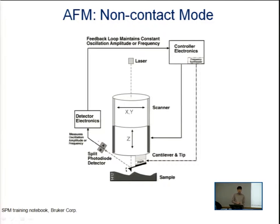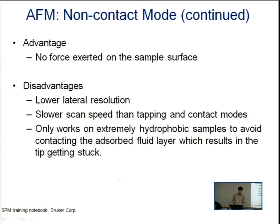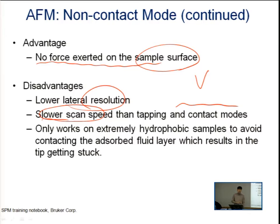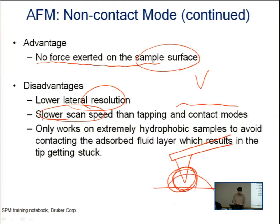The non-contact mode is similar to tapping mode but has a much bigger gap between the cantilever and the surface. It has all the advantages of tapping mode and, since it never touches the surface, does not damage anything. However, as the distance between tip and surface increases, resolution decreases. It also has the slowest scan speed. Additionally, if there is moisture present on the sample surface, the cantilever can become stuck by the moisture — another disadvantage of this mode.